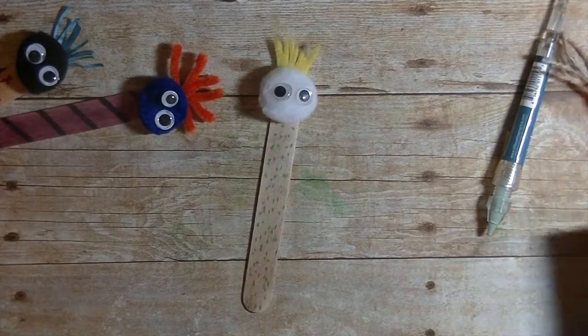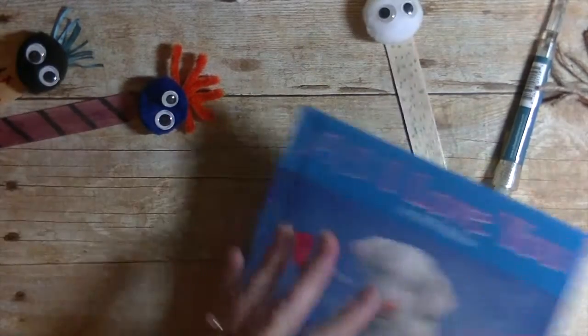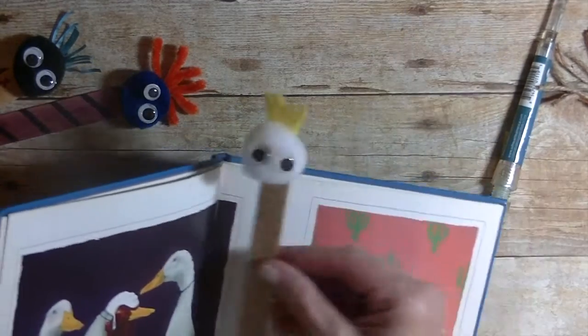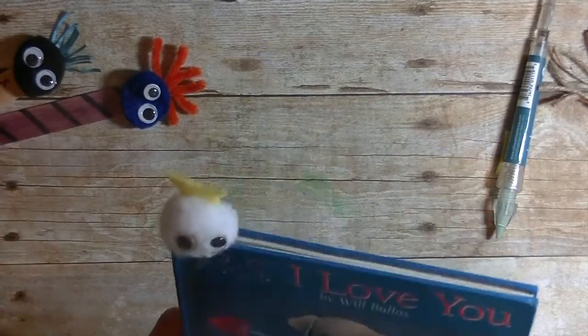Alright. Now to know how they work, the bookmark. So the book here, with glue strings all over it. Open it up. And put your little bookmark guy in there. And the pom-pom sticks out. And this way they know where they left off when they're reading.